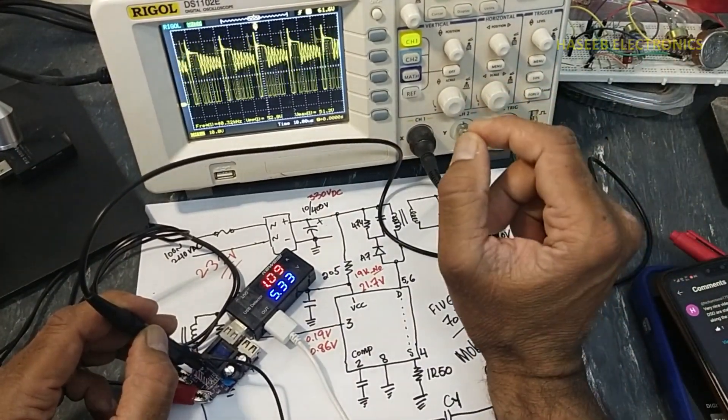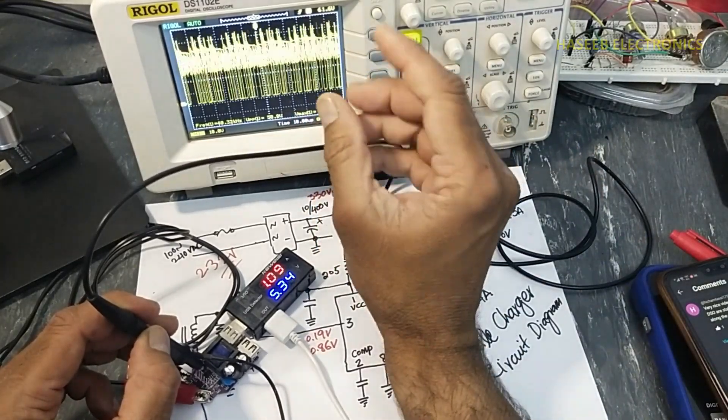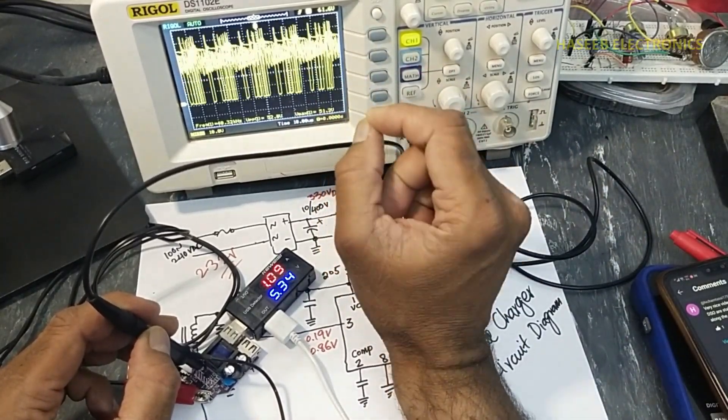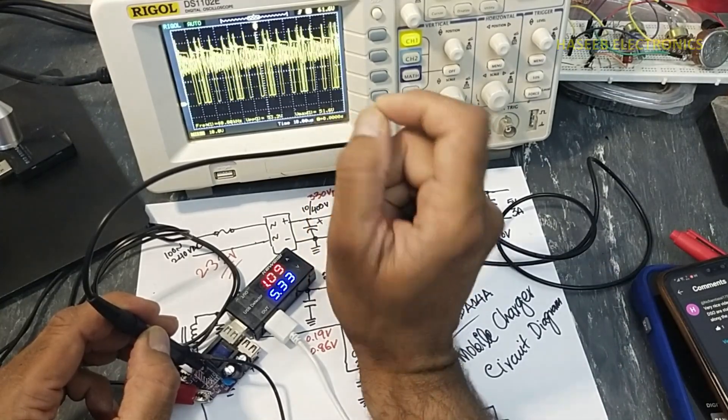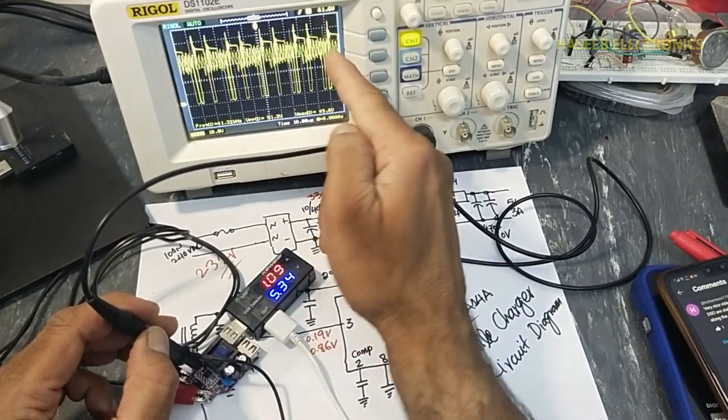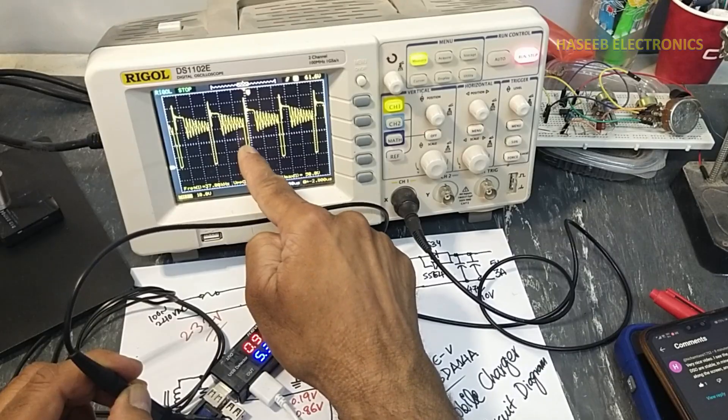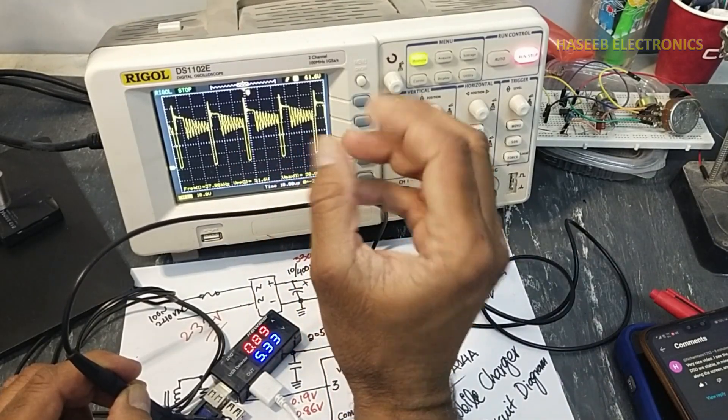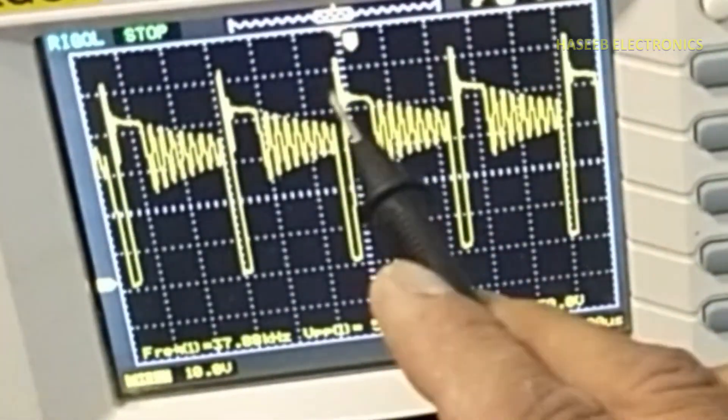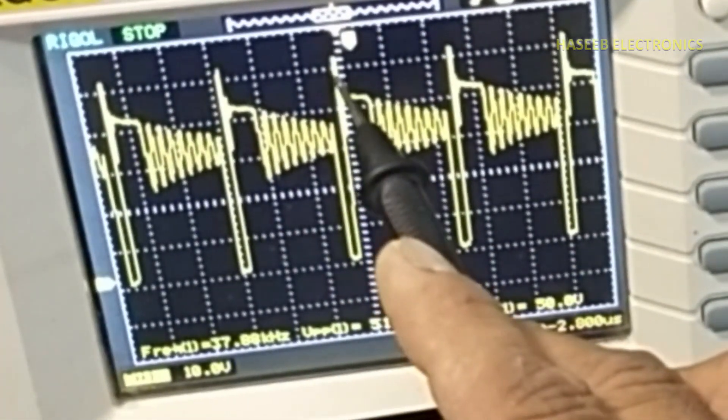It is due to trigger, because oscilloscope uses trigger function to display any signal, to plot any signal on the screen.